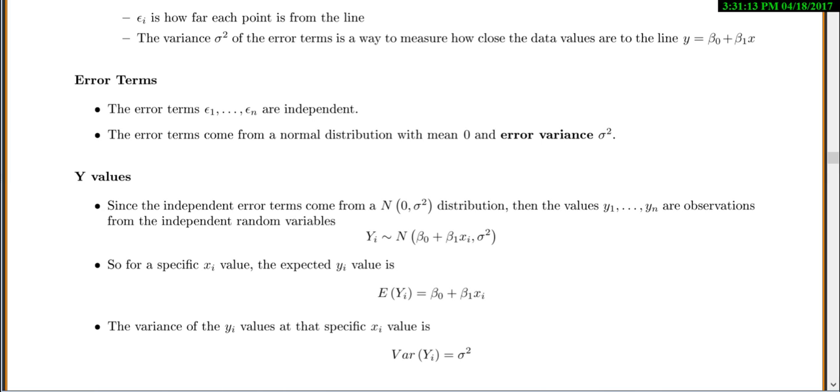And if we know that, then we can find some things about the y values. Since our independent error terms come from a normal distribution, then our y values should be independent y values from this normal distribution, where the mean, or the expected value, should just be what point you'd calculate for the line, and then you have the variance of the error terms. So then the expected value for your y value would just be what the line should be, and the variance is the variance of your error terms.